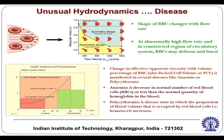Change in effective viscosity with volume percentage of red blood cells is manifested in several diseases like anemia or polycythemia. Anemia is a decrease in the normal number of red blood cells or less than normal hemoglobin quantity. Polycythemia is a disease state in which the proportion of volume occupied by red blood cells increases beyond the normal amount. In these two extreme conditions, we can relate the disease to the hydrodynamics through the rheology.